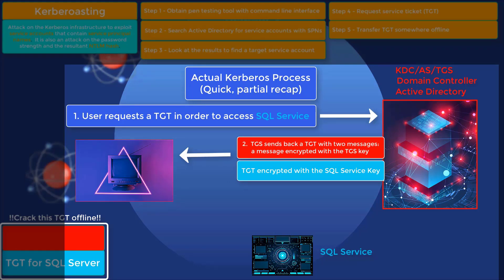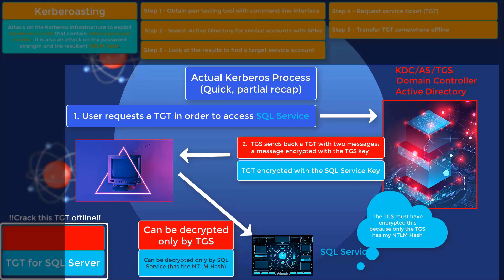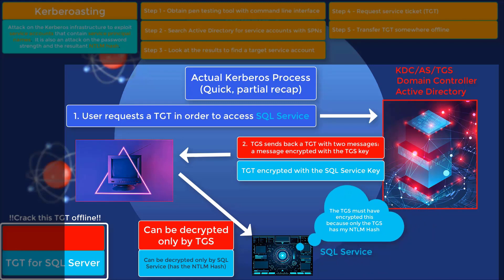It is the SQL server — the principal in our scenario — that is the only one able to decrypt the TGT, because the Ticket Granting Server encrypted the TGT with the SQL server's NTLM hash. Since the SQL server is the only one that has its own secret key and resulting NTLM hash, it is the only one that can decrypt the TGT. And since the TGS is the only other entity that knows the NTLM hash of the server's secret key, the server knows the TGT was issued by the TGS.